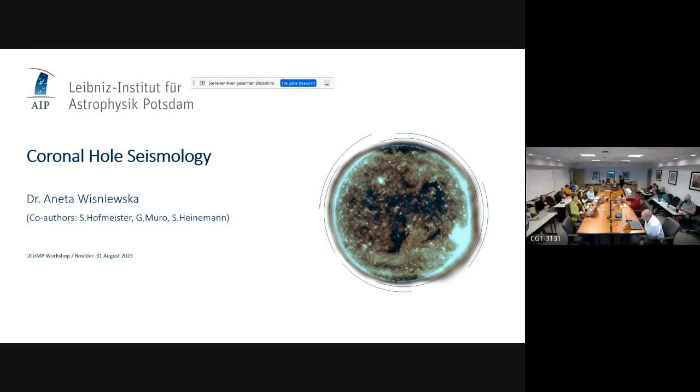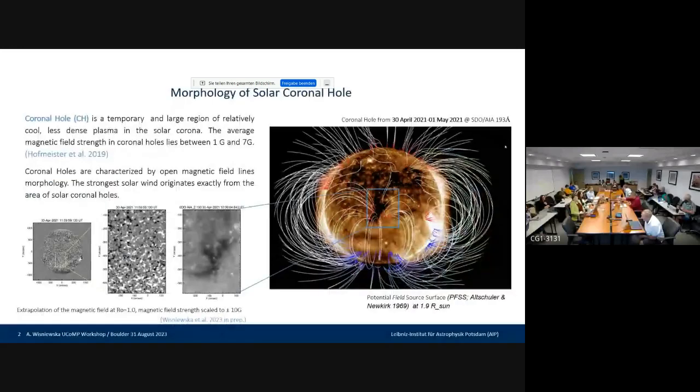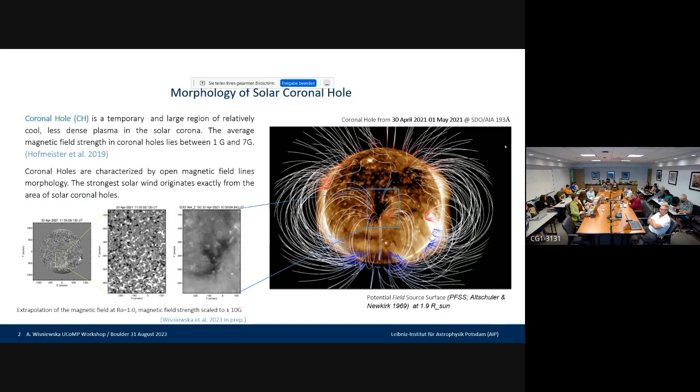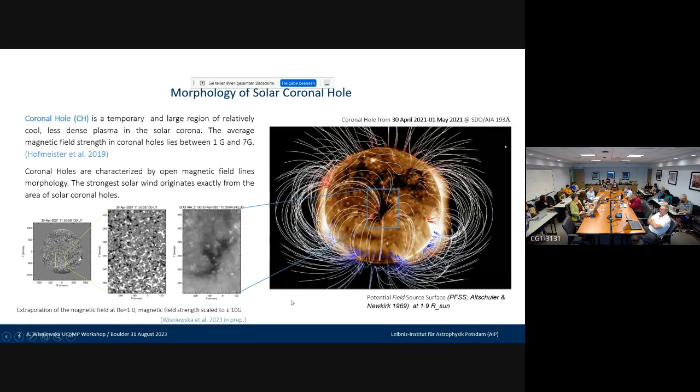We already heard today Richard mentioning a lot about the waves and coronal holes. We know that the corona is highly inhomogeneous, and actually coronal hole is a temporary and large region of relatively cool, less dense plasma in the solar corona. The average magnetic field strength of coronal holes lies between one and seven Gauss. What is most important is that those kind of features are characterized by open magnetic field lines, and the stronger solar wind originates exactly from the area of coronal holes.